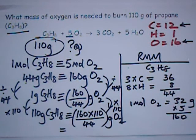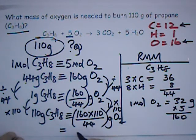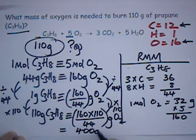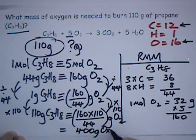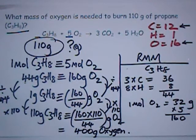Let's see what that comes out to be. So that's 160, multiplied by 110, divided by 44. That gives me exactly 400 grams of oxygen.